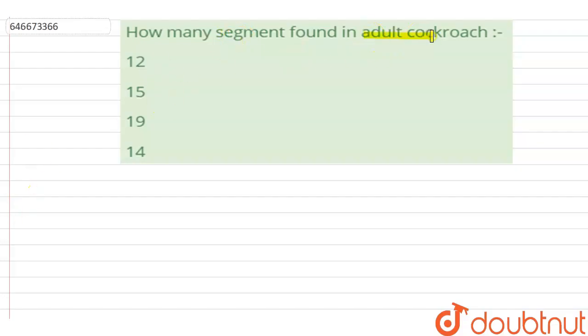How many segments found in adult cockroach? The options are 12, 15, 19, and 14. So the entire body of cockroach...